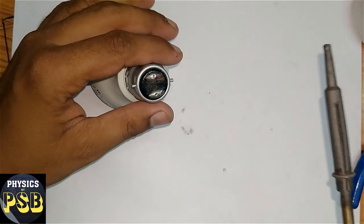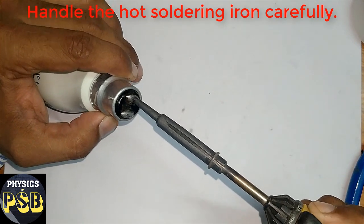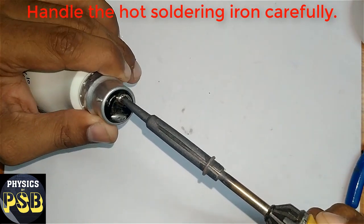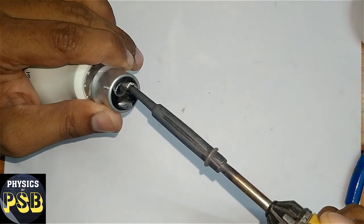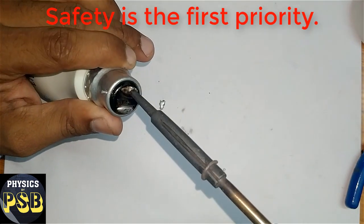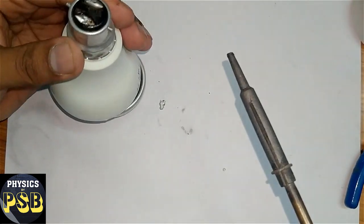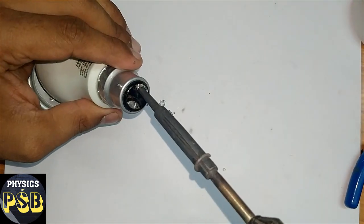And do the same thing to this portion as well and remove this. You supply the hot soldering iron on this; it melts and it comes off very easily.